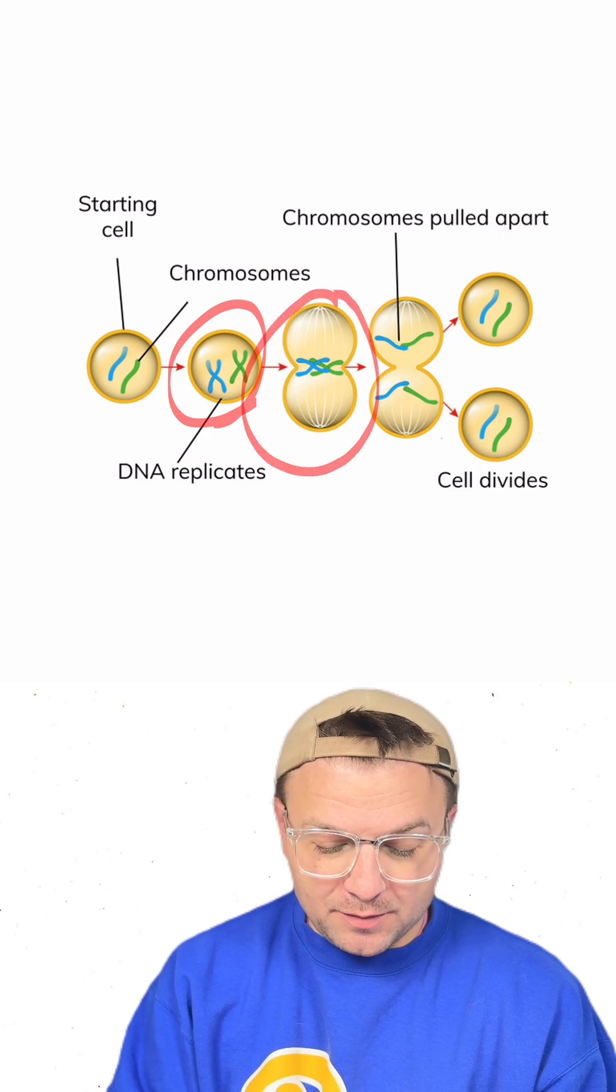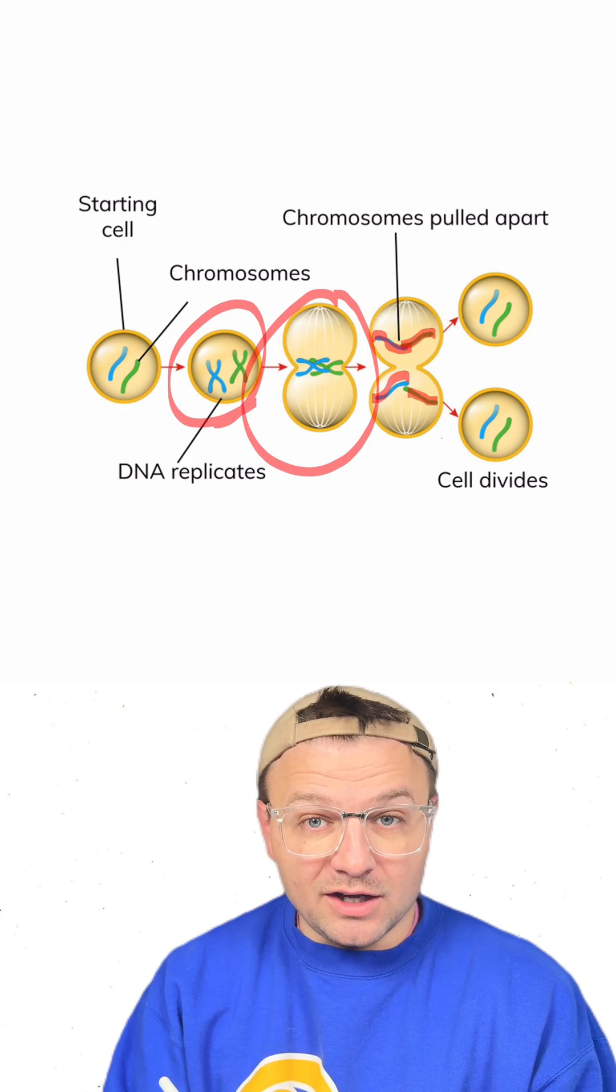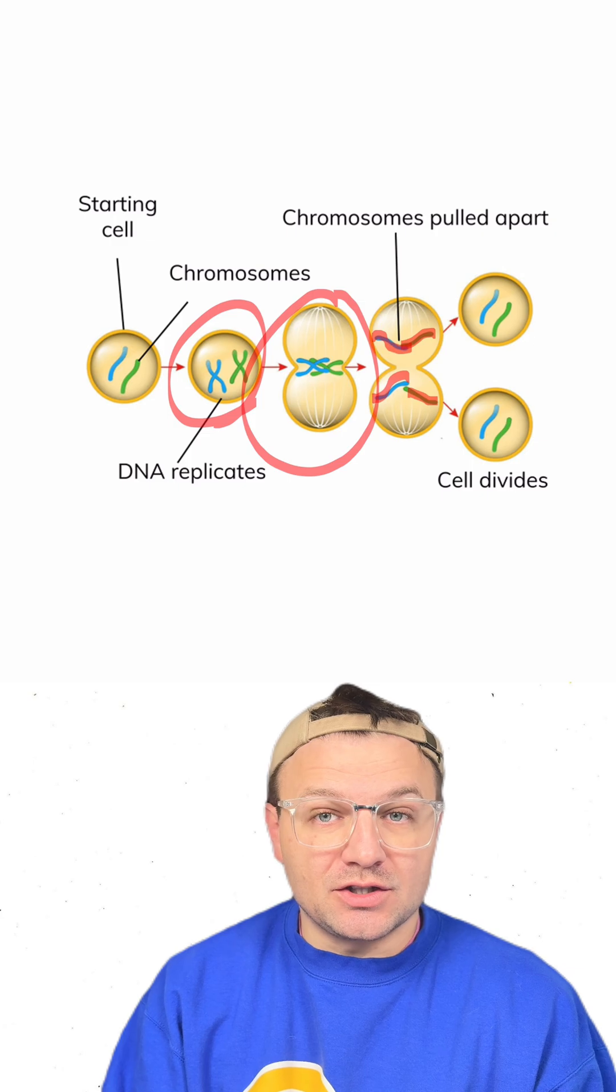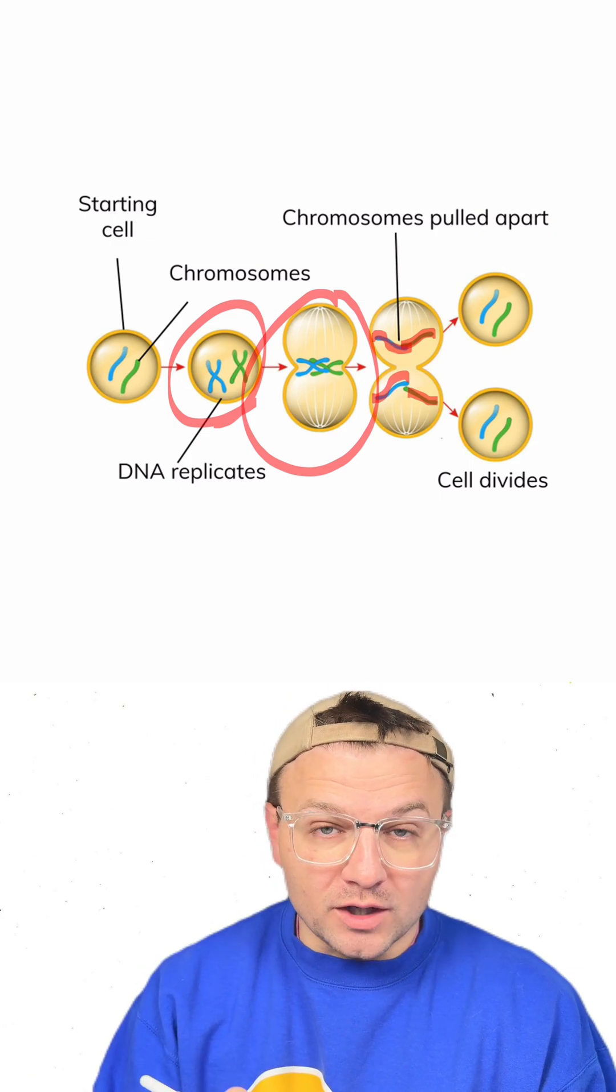You can see this cell is starting to split. And after the chromatids have split, each of these structures is still a chromosome. So what's going to happen is we're actually going to double the amount of chromosomes in the cell before it splits.